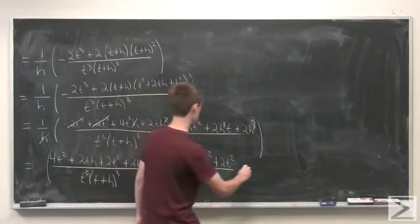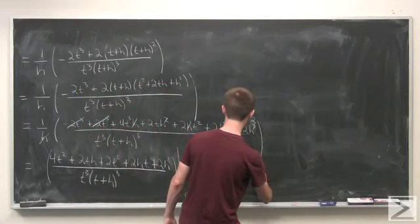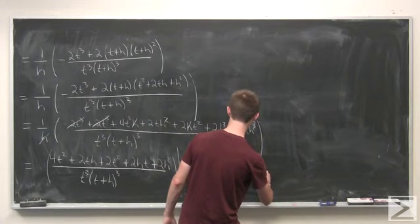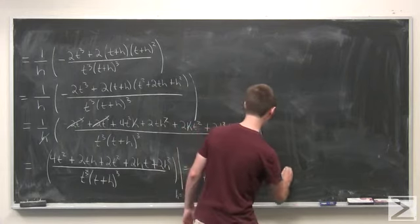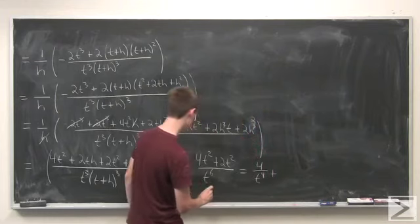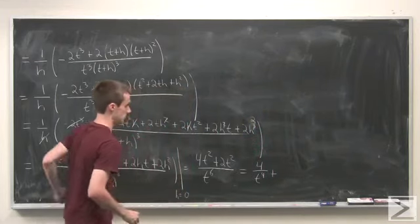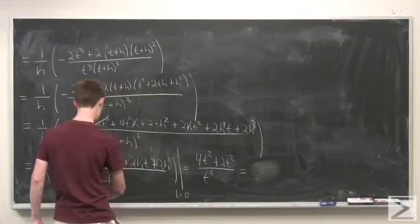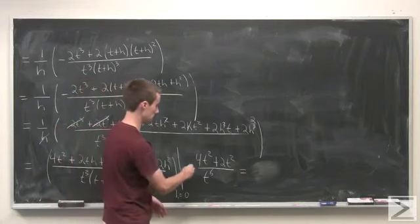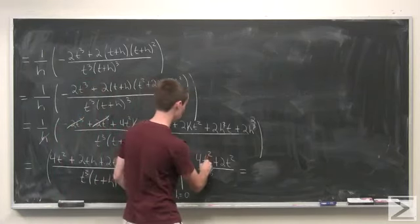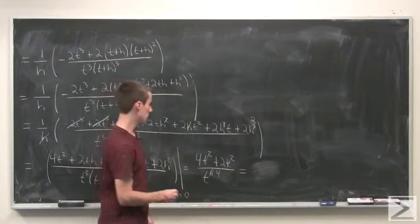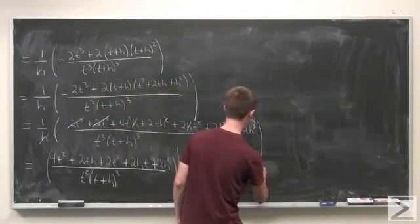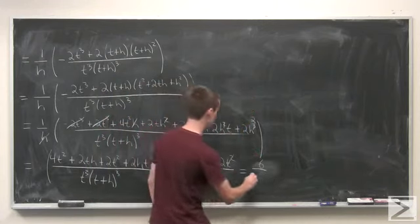Simplify this out a little bit and we end up with 4 over t to the 4th plus 2 over t to the 4th. Actually gets even better than this because we can just cancel out a t squared from each term, changing this exponent to a 4 and we have 4 plus 2 which is 6 over t to the 4th.